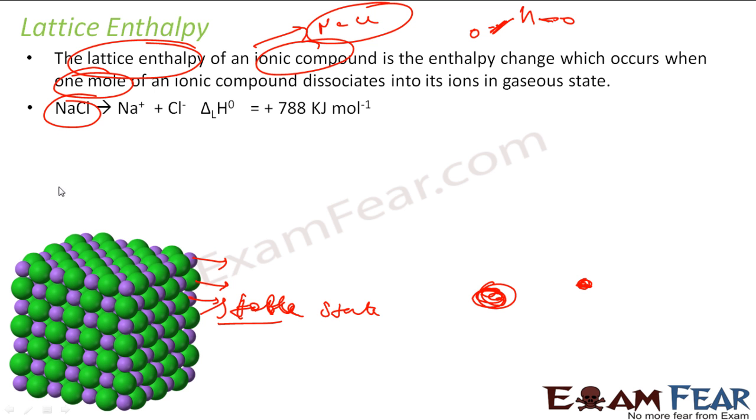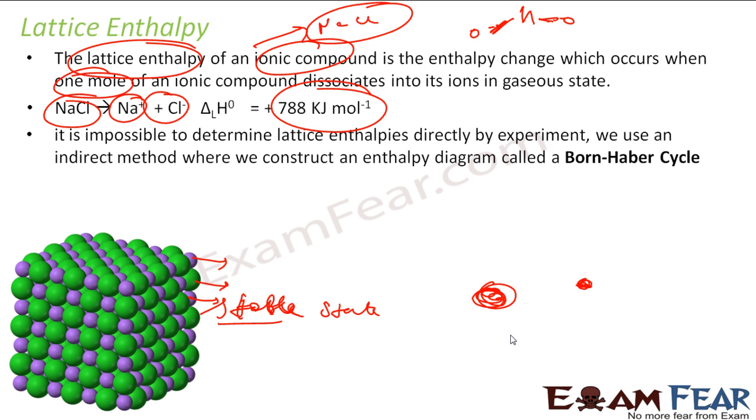The example was, I have this NaCl in lattice form. You want to break this sodium and chlorine into ions in the gaseous form. You have to give this much energy - 788 kJ per mole. But the trick here: it is impossible to determine this lattice enthalpy directly by experiment. So what we do is we use an indirect way and we use something called Born-Haber cycle to find this lattice enthalpy. NaCl - because it is almost impossible to do it experimentally to break this NaCl into Na plus and Cl minus ion and also find the energy required. So we use Born-Haber cycle.